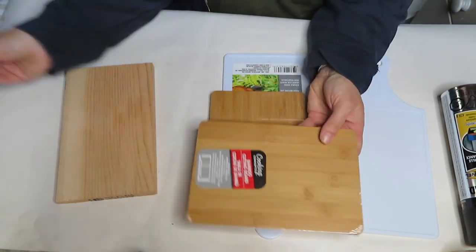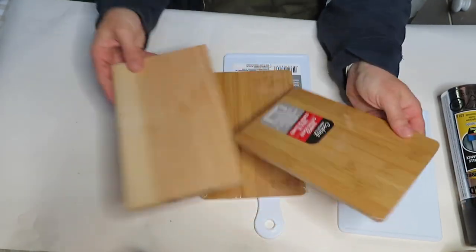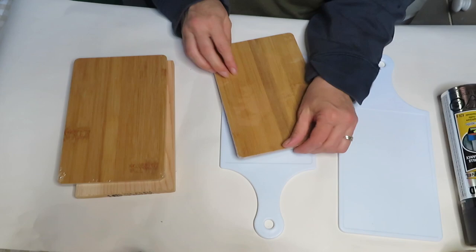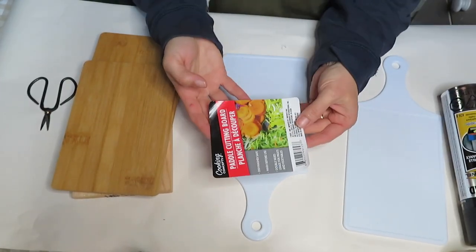So the first thing that I do is I just take everything apart. I took the stick off of the plunger, I opened my cutting boards, took the stickers off, and just prepped everything.